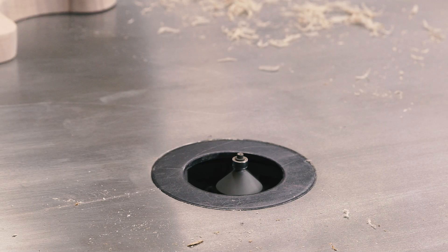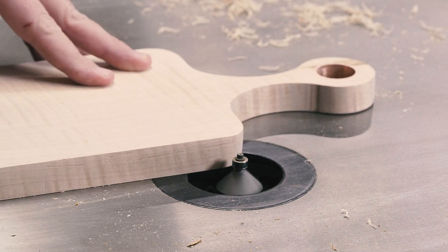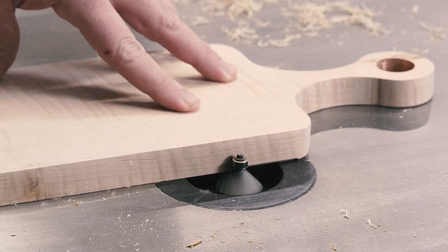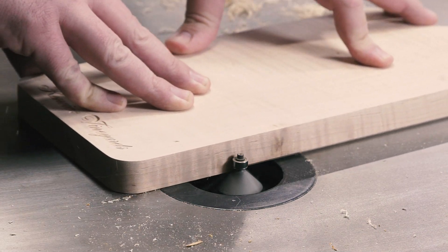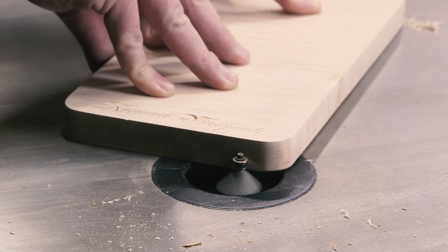With a Ramana 45 degree chamfer bit in the router table, I added a small chamfer around the edges of the board to soften the feel a bit, which also takes care of that little bit of tear-out under the logo you might have noticed.